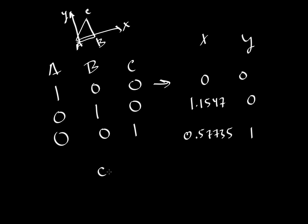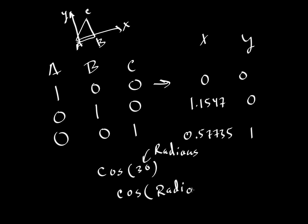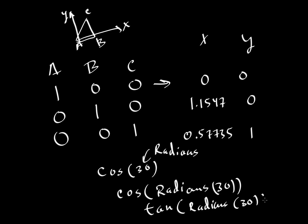Be careful when entering these into Excel: the cosine of 30 degrees should actually be entered in radians. So write COSINE(RADIANS(30)) and similarly for the tangent: TANGENT(RADIANS(30)). Excel by default reads entries as radians, not degrees. In radians, 30 degrees is a little over 0.5, but you'll get a more precise value by using the RADIANS function.